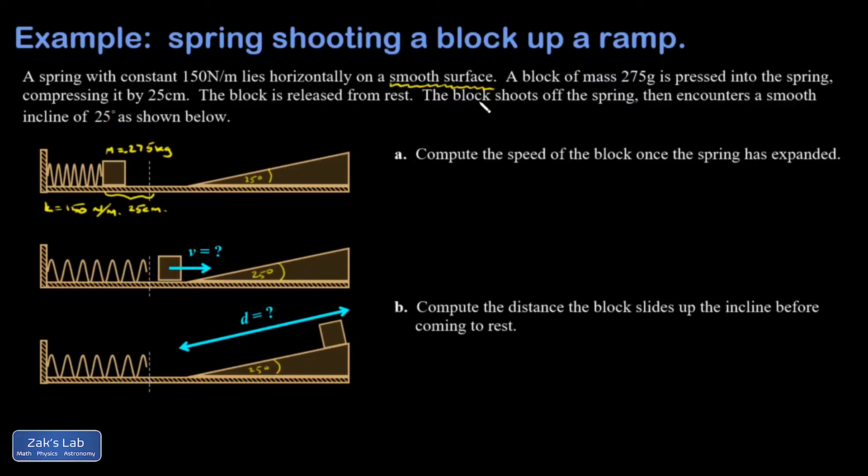And then part A is what's the speed of the block right when it comes off the spring. So that's spring energy converted to kinetic energy. And then part B, what's the distance the block slides at the incline before coming to rest. And that's that kinetic energy being converted into gravitational potential energy.